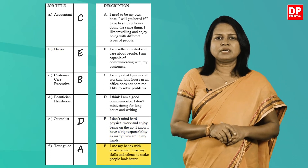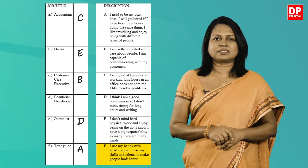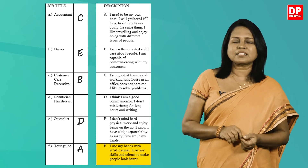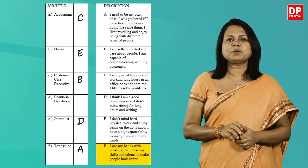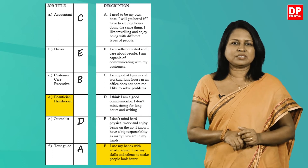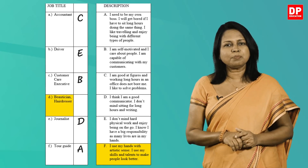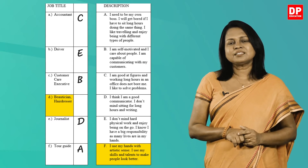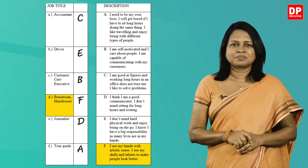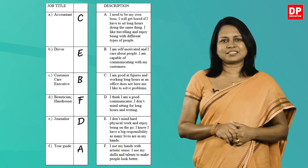Last one: I use my hands with artistic sense. I use my skills and talents to make people look better. So it's the beautician or the hairdresser, as he helps people look better. Write F against that. I hope you got them correct.